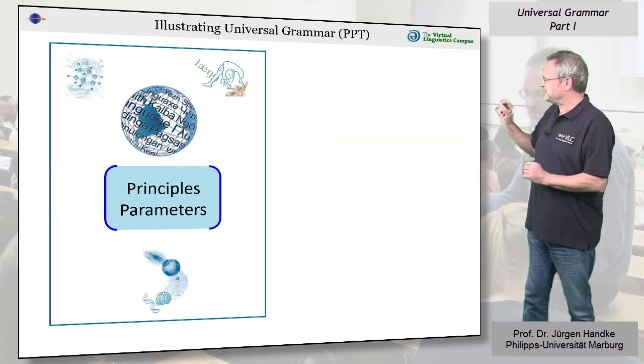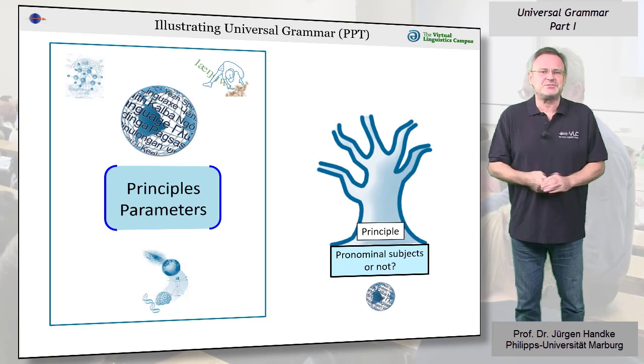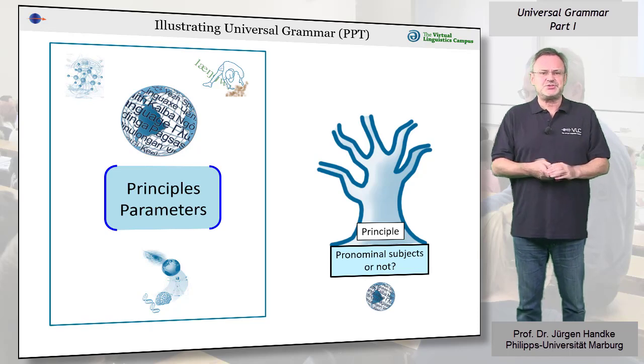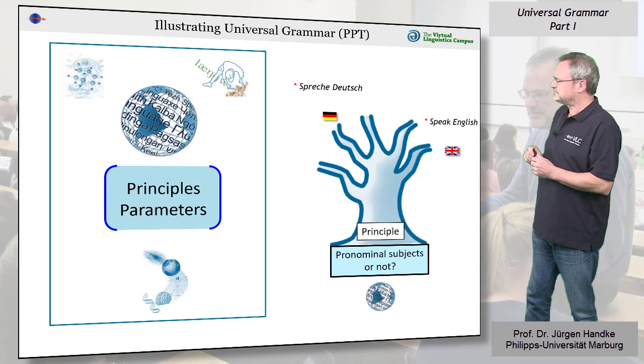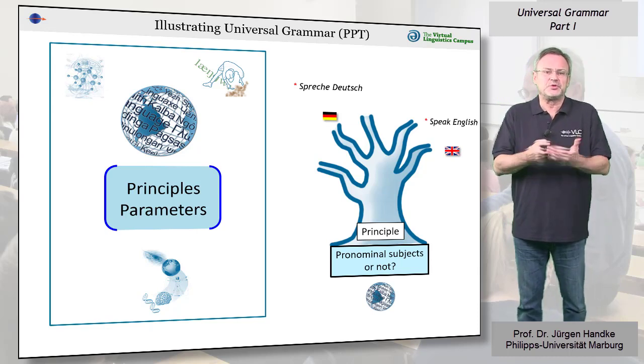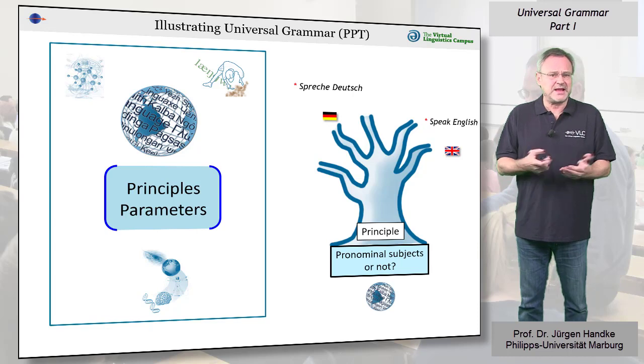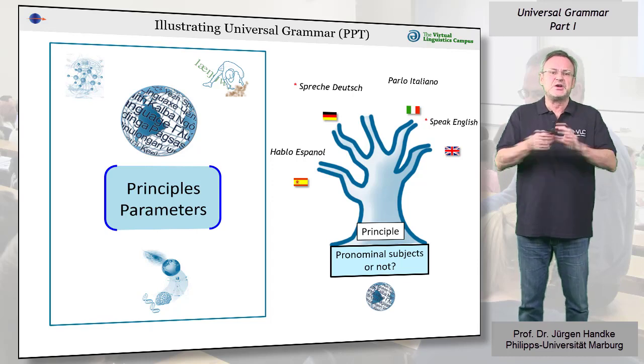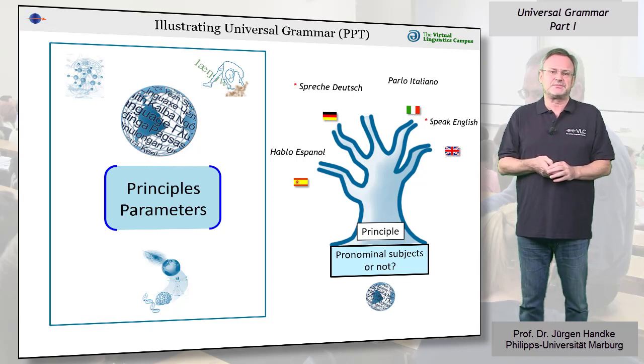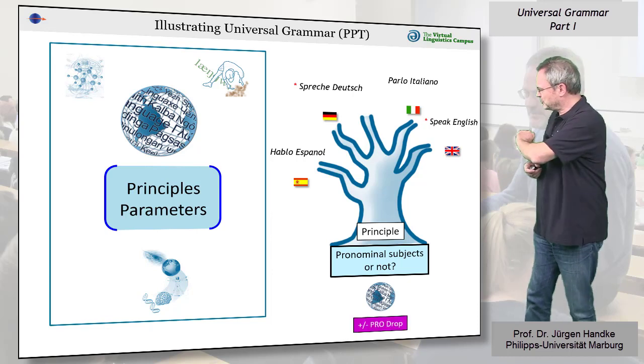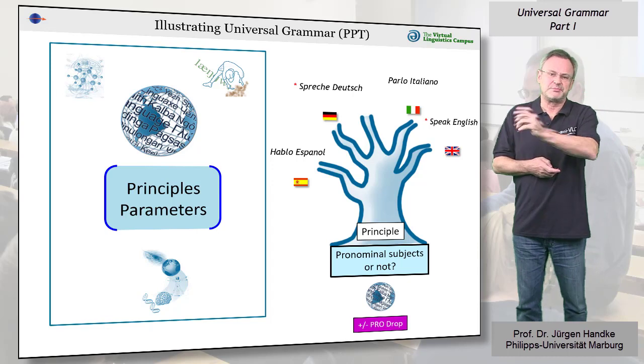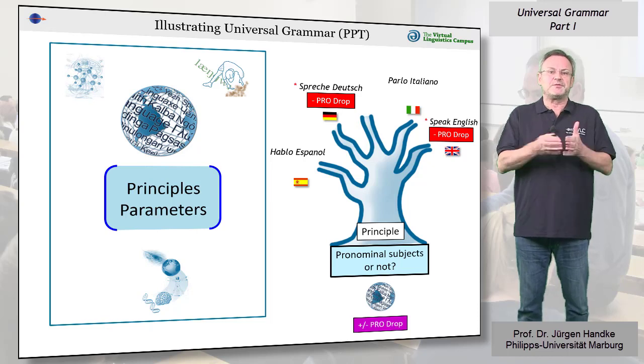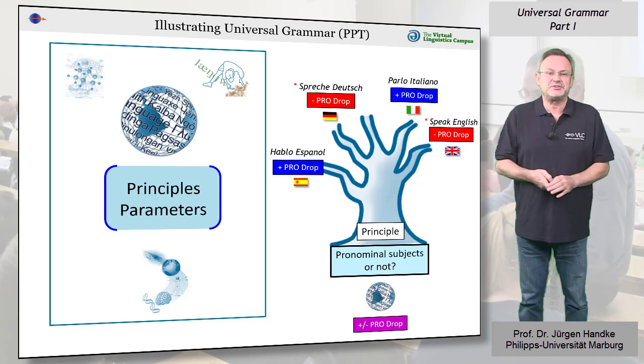Here is a linguistic principle. Standard declarative sentences normally have an overt subject, even if the subject is a pronoun. This is true for English and German, where sentences without the pronominal subject are ungrammatical. Languages such as Italian or Spanish, by contrast, can form fully grammatical sentences without the need for separate subjects. This parameter has become known as the PRODROP parameter. Some people also call it NULL SUBJECT parameter. It is set minus for English and German, where the pronoun cannot be dropped, and plus for Italian and Spanish.